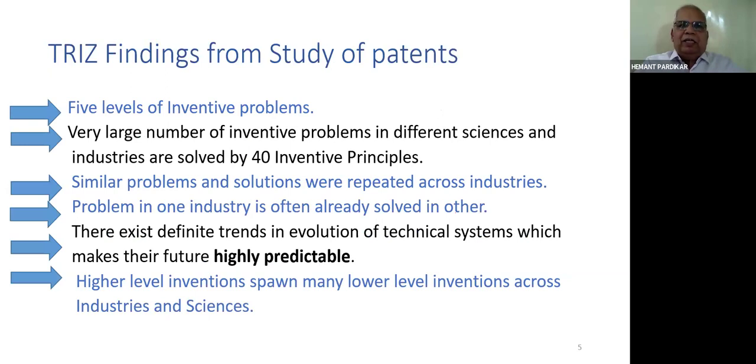There are five levels of inventive problems. Level 1 is simple improvement, 32% of all patents, requiring 1 to 10 random trials. Level 2 is small invention inside existing technology, 45% of patents, requiring 10 to 100 random trials. Level 3 is substantial invention within a technology, 18% of patents, requiring 100 to 1,000 random trials.